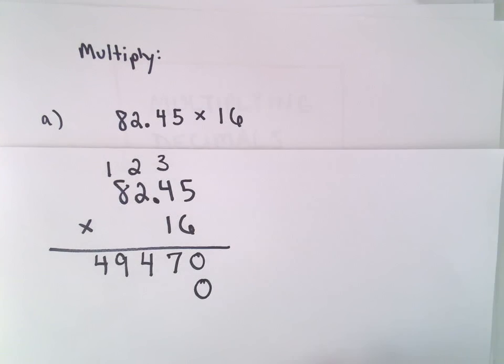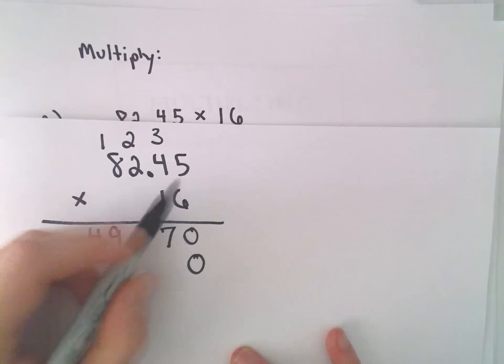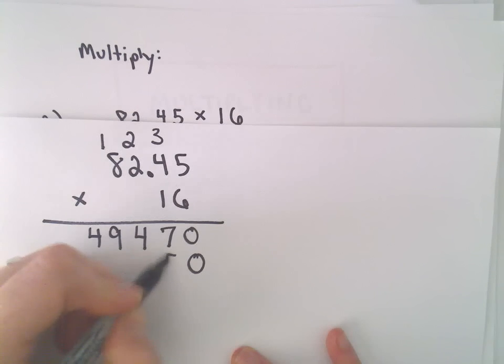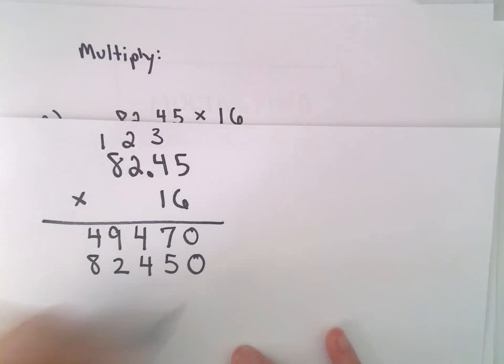Okay, then I'm going to drop a 0 down, and then I'm just going to multiply everything by 1. So we'll just get 1 times 5, 1 times 4, 1 times 2, 1 times 8.